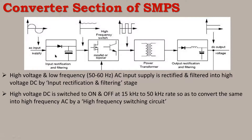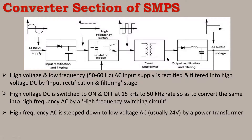So the two sections are: input rectification and filtering circuit, producing high-voltage DC, and the high-frequency switching circuit, producing high-frequency AC. This high-frequency AC is fed into a power transformer, which is a step-down type transformer. For example, 230-volt high-frequency AC is stepped down to 24-volt high-frequency AC.